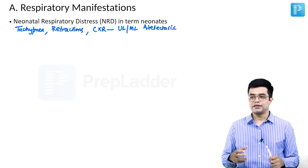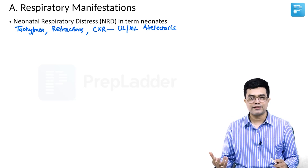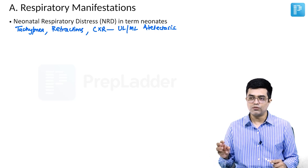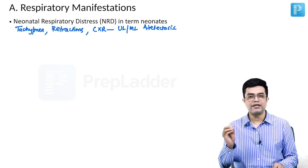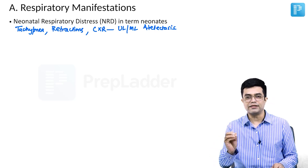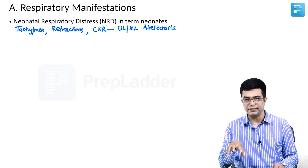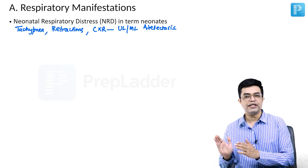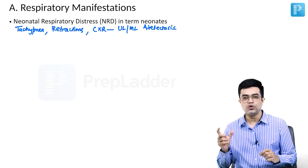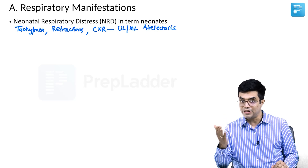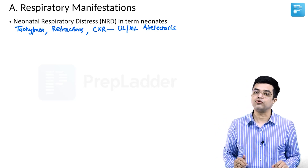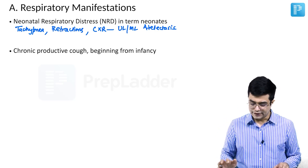Some texts say that any newborn having respiratory distress with atelectases in a term baby, along with the presence of situs inversus, should be soft clues that we may be dealing with a Kartagener syndrome-like condition.